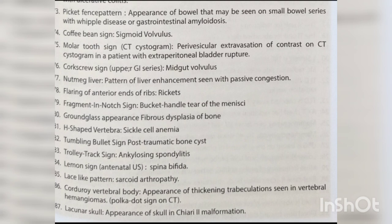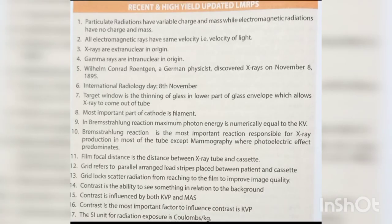Lemon sign — spina bifida. Lace-like pattern — sarcoid arthropathy. Corduroy vertebral body appearance — thickening of trabeculae seen in vertebral hemangiomas. Polka dot sign on CT — lacunar skull appearance of skull in Chiari 2 malformation.